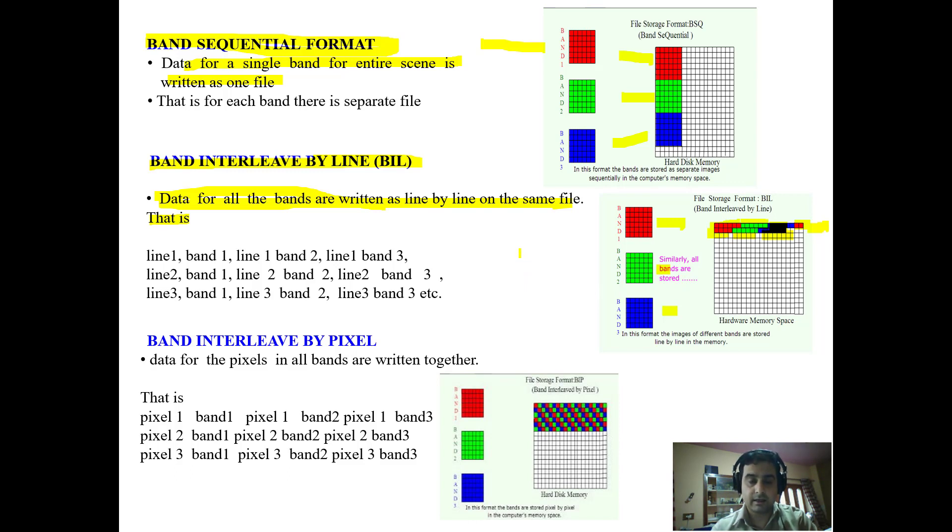Now these are going to have some advantages and disadvantages. Before that, we can have a look at band interleave by pixel. As the line was stored for each band in a single file, here data for the pixels in all bands are written together. Means pixel 1 from band 1, then pixel 2 carries band 2 data, pixel 3 carries band 3 data.